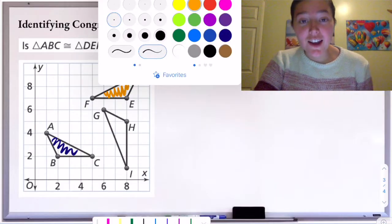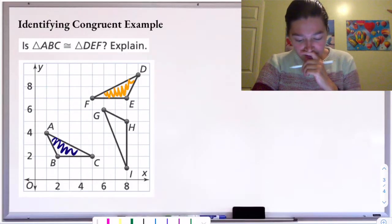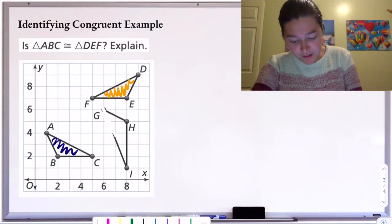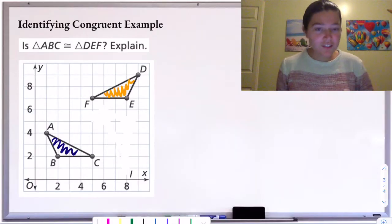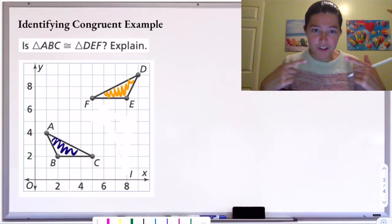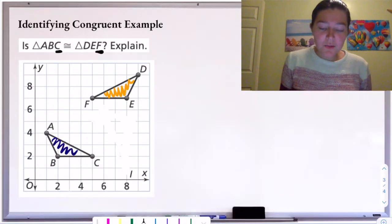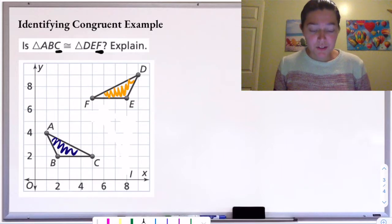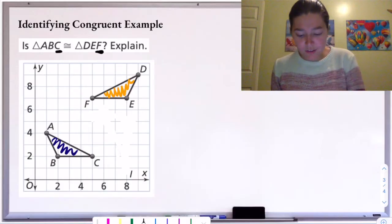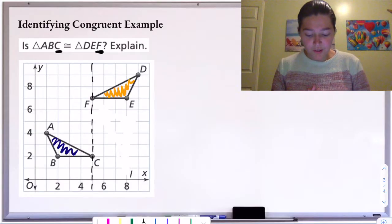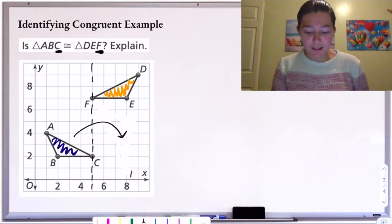We have to come up with a sequence of transformations that takes triangle ABC to triangle DEF. First, are the shapes currently facing the same direction? No, so it can't just be translations. Are they facing opposite directions — like mirror images or reflections of each other? Yes, they appear to be. Based on how the question is named, C and F are corresponding points, meaning after the full transformation, C and F would be on the same spot. It looks like C and F are currently lined up, so if I reflect over the line x equals five — a vertical line intersecting the x-axis at five — I'll be lined up with triangle DEF.